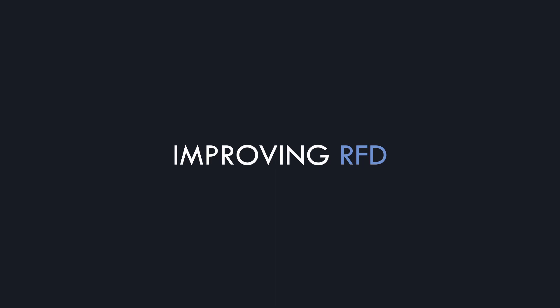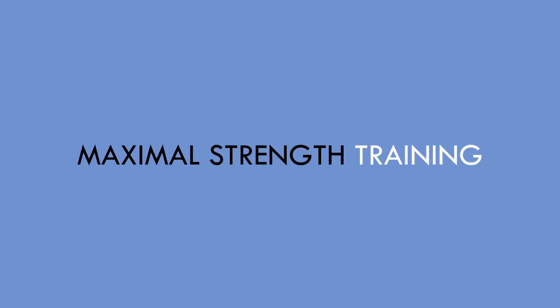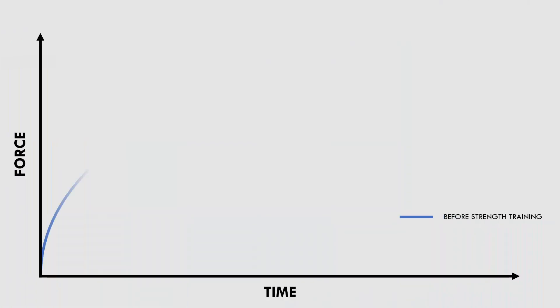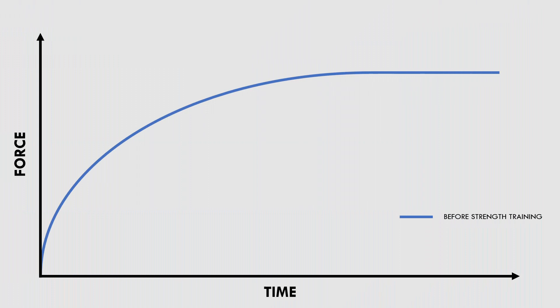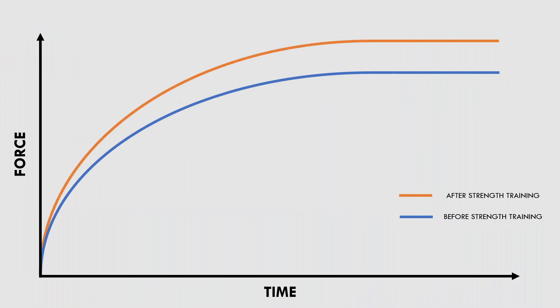So how can we improve rate of force development? There are two primary ways that we can do this. The first training method is maximal strength training. Maximal strength training will increase the absolute amount of force that can be produced. This won't actually increase how fast force can be produced, but it will raise the ceiling of how much absolute force can be produced. As we can see in this graph, an athlete who has become stronger can produce higher peak force in the same time frame.